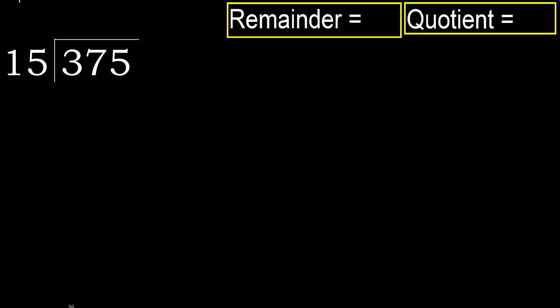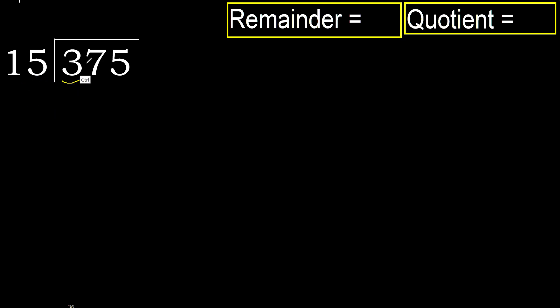375 divided by 15. 3 is less, therefore next. 37 is not less, therefore we work with 37.